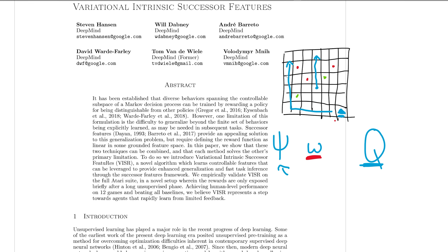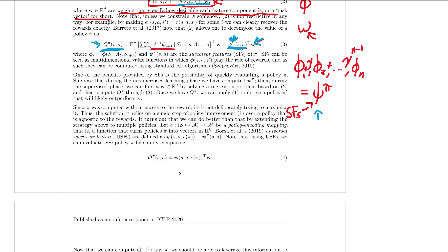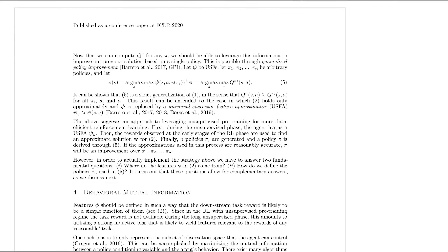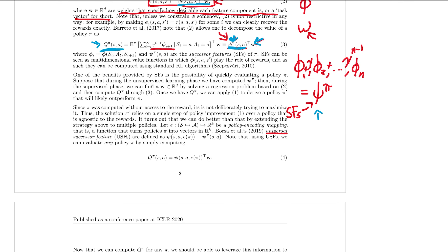That is why this is so significant. We can take this even another step further if we move on to universal successor features. Remember earlier when I mentioned that we can't forget about the pi here, because successor features very much depend on our policy. Well, universal successor features says: why don't we make this in a way that we can learn the successor features of any policy? These successor features for all policies are called universal successor features. Instead of having successor features for a specific policy, we pass in the parameters or some part of that policy to get those successor features.